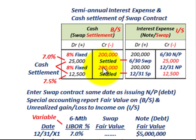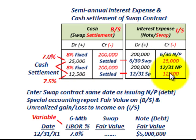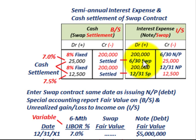For the next period (12/31): again debit interest expense $200,000 for the fixed payment. The cash settlement based on 7.5% interest is $12,500 received, which reduces interest expense by $12,500. In both cases, Corp A received net cash rather than paying it out because the variable rate was less than the fixed rate, reducing interest expense via the swap contract.